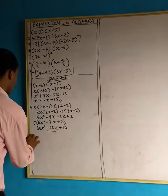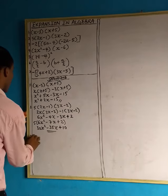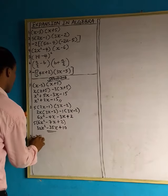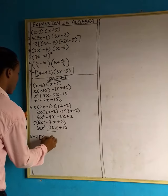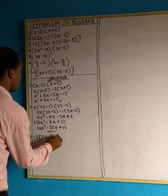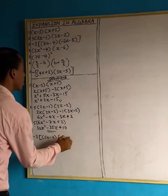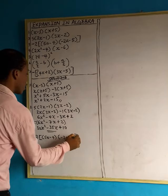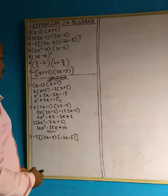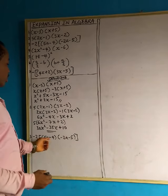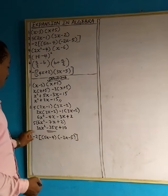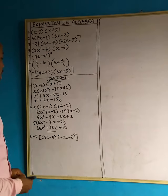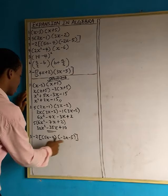We move to question 3. Question 3 says: minus 2, open bracket 5a, open bracket 5a minus 4, minus 2a minus 5. Once again, let's concentrate on expanding the bracket inside first, so that for our final answer we then multiply by minus 2. So let's expand the bracket inside.